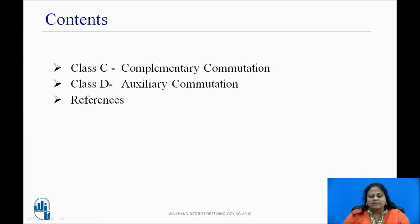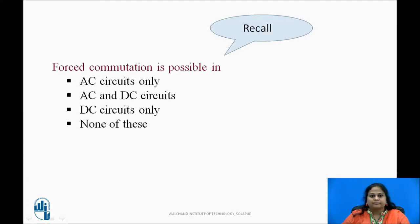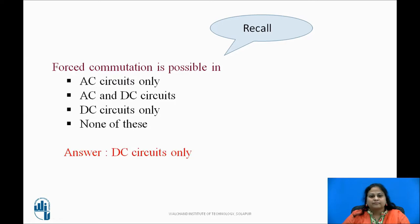These are the contents we will be covering in this session. In the previous session, we discussed natural commutation, forced commutation, class A and class B type commutation methods. Before moving ahead, pause the video and recall whether forced commutation is possible in AC circuits only, AC and DC circuits, DC circuits only, or none of these. The answer is DC circuits only.